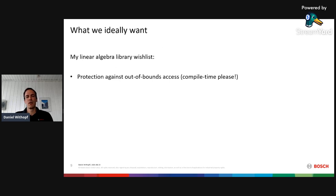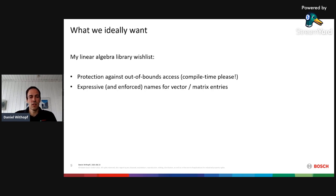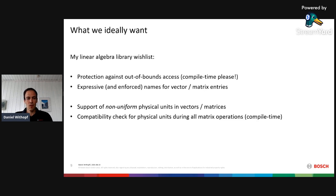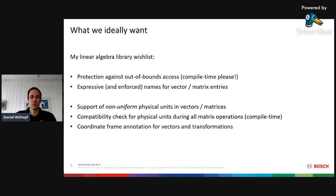From these examples, I came up with my linear algebra wish list. First, I would like protection against out-of-bounds access at compile time — not at runtime, because that's too late. Second, I would like expressive and enforced names for all vector and matrix entries. When I implemented that, I realized much more can be done: if we have expressive and enforced names for entries, it's also possible to support non-uniform physical units in vectors and matrices. Furthermore, we can achieve a compatibility check for physical units during all matrix operations at compile time. And finally, it's possible to achieve coordinate frame annotations for all vectors and for transformations between different vector spaces.